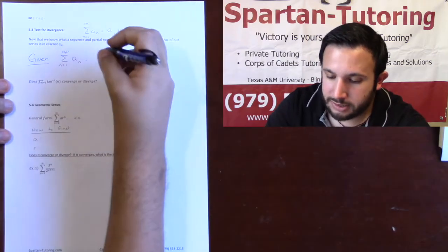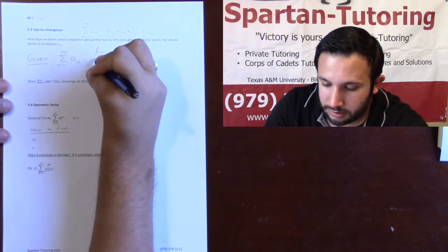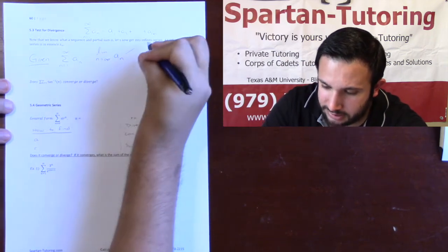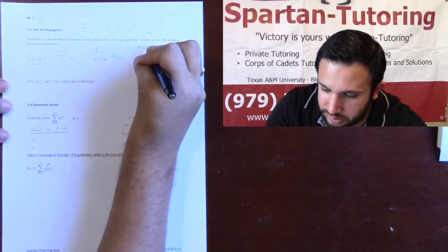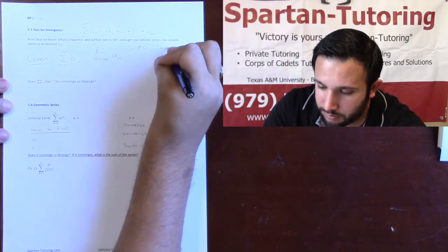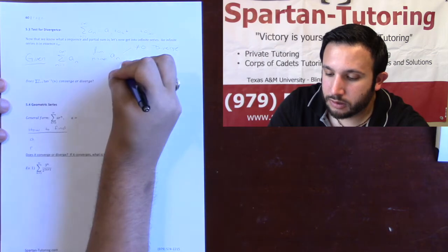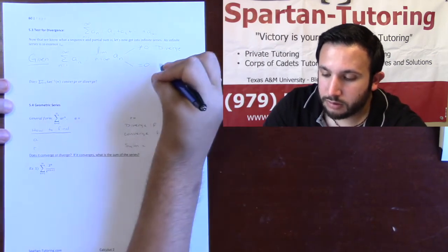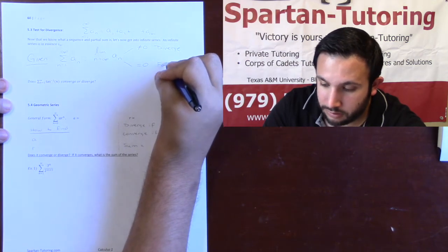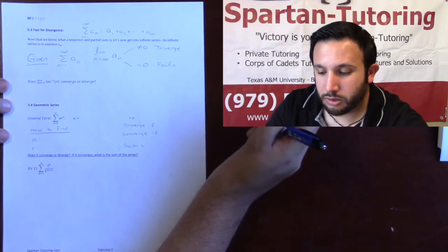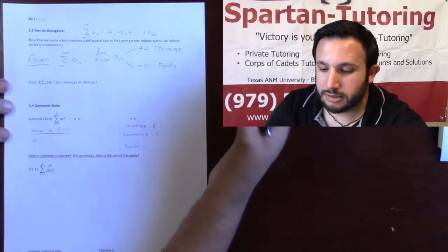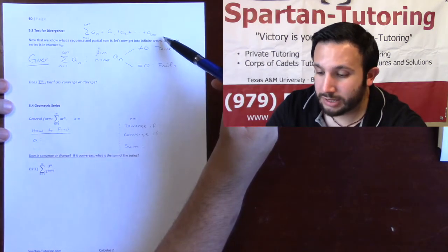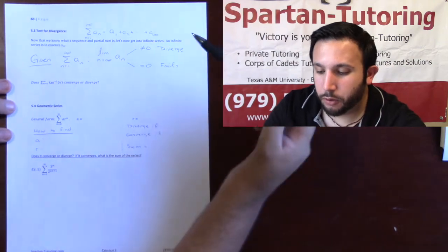What the test for divergence says is: you're going to take the limit as n approaches infinity of a_n. If that limit does not equal 0, your infinite sum will diverge. However, if your limit does equal 0, this test fails — just because the last term in your list goes to 0 does not necessarily mean that your infinite sum converges. Your sum can get to infinity before your term gets to 0.